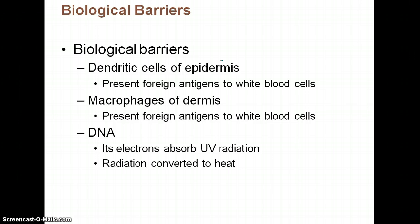Biological barriers include dendritic cells in your epidermis — those are your Langerhans cells — which help your body attack foreign antigens. You also have macrophages in the dermis that do essentially the same thing. Additionally, DNA absorbs UV radiation and converts that radiation to heat.